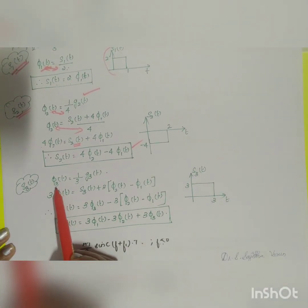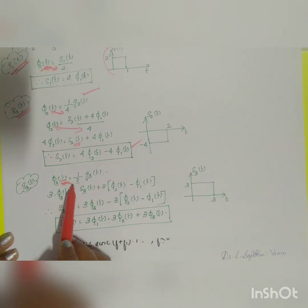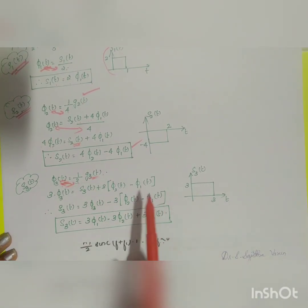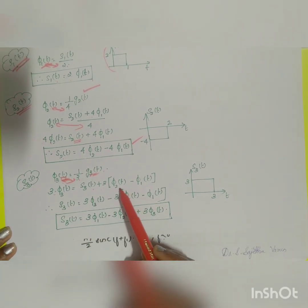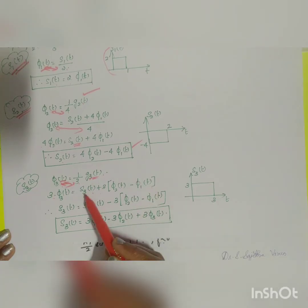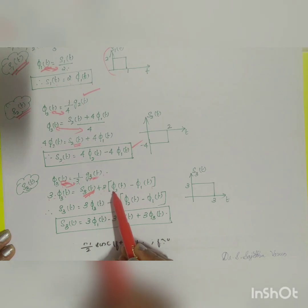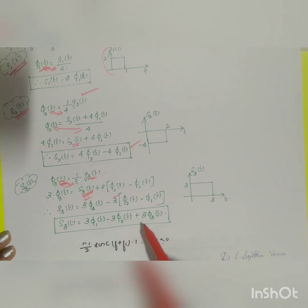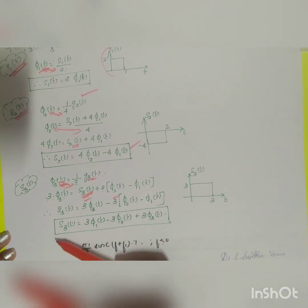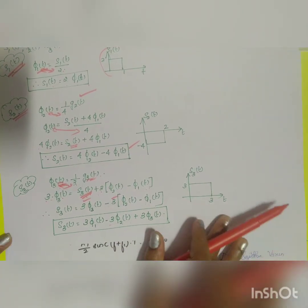s3(t): since φ3(t) = (1/3)·g3(t) and g3(t) = s3(t) + 3·φ2(t) − 3·φ1(t), rearranging gives s3(t) = 3·φ3(t) − 3·φ2(t) + 3·φ1(t), which can be written as s3(t) = 3·φ1(t) − 3·φ2(t) + 3·φ3(t).